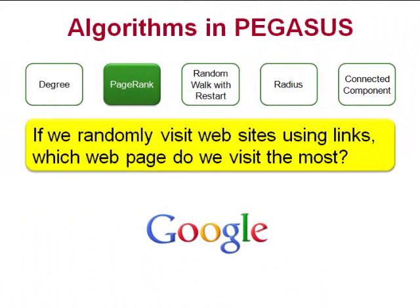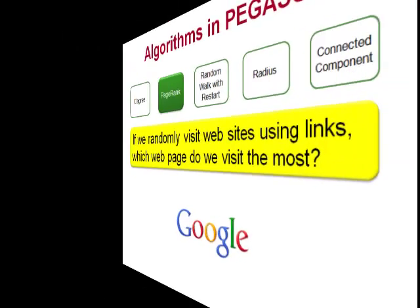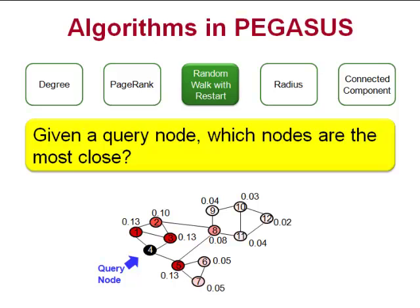Pegasus implements the PageRank algorithm, which is a well-known algorithm used by Google to rank web pages. Intuitively, it computes an importance score for each node in a graph. The Random Walk with Restart algorithm is a generalization of the PageRank algorithm. The algorithm lets you select a node, or set of nodes, then computes the importance scores of all other nodes relative to your chosen ones, letting you rank all other nodes' importance with respect to your chosen nodes.